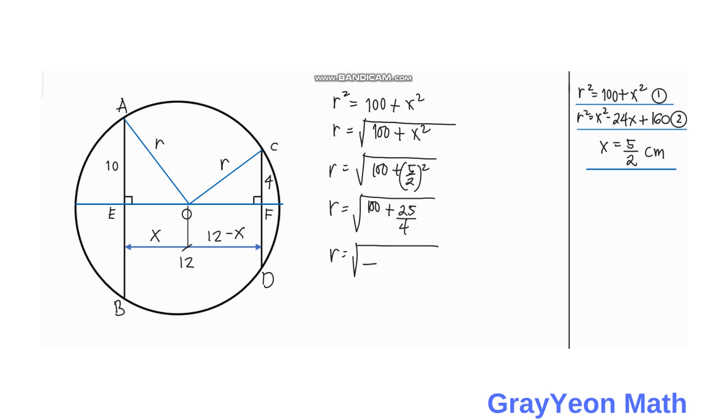R is equal to the square root of 4 times 100, which is 400, plus 25. R is equal to the square root of 425 over 4. But 425 can be written as 5 squared times 17 over 2 squared, so you have R equal to 5 over 2 times the square root of 17 cm, and that is our answer.